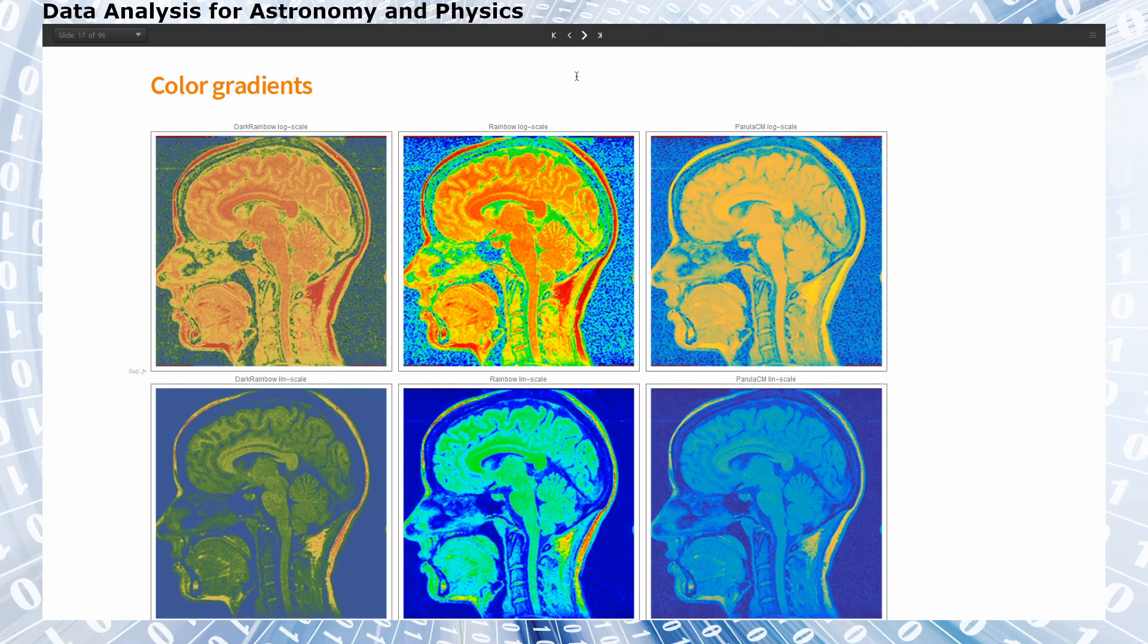Because we must take careful care not to hide parts of the data just by choice of our color scale. And this is shown here by comparing three different color scales.